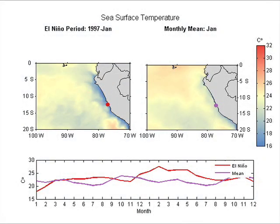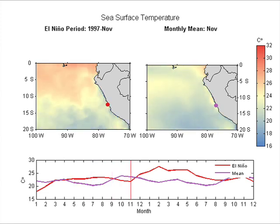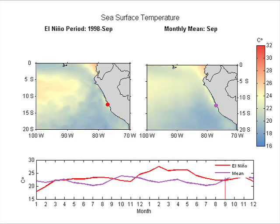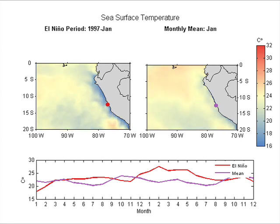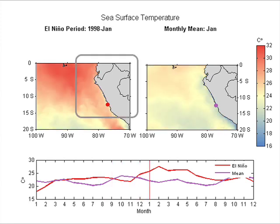The two top panels show monthly ocean surface temperature at the Peruvian coast. Red is warm and blue is cold. The left map shows temperature during an El Niño period, and the right map shows average temperature during a non-El Niño period. The bottom panel describes monthly temperature offshore of Lima — the red line is temperature during El Niño and the purple line is temperature during non-El Niño. You can see the warm water flow from the equator; after December, the Peruvian coast becomes unusually warm. From the bottom panel, you can see this temperature difference is around 5 degrees.